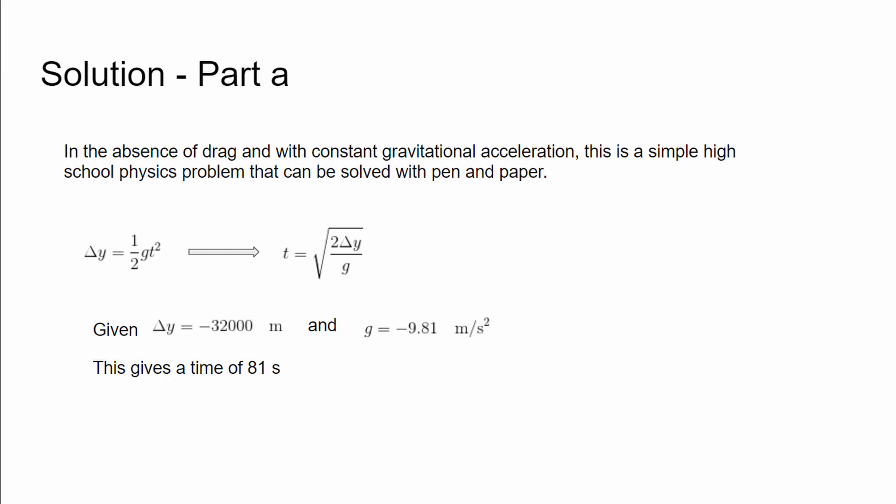Before we get going with the actual coding, the solution to part A is easy — it's high school physics and can be done with pen and paper. The height change equals one-half the acceleration due to gravity times the time squared. You just rearrange the equation, plug in the numbers, and you get a time of 81 seconds. So our code better produce the same result.